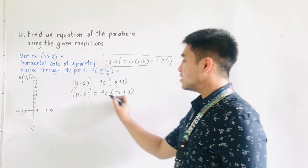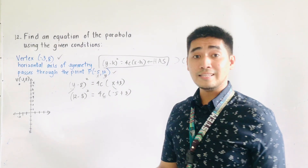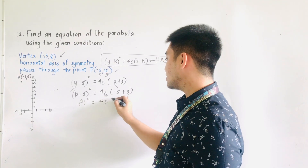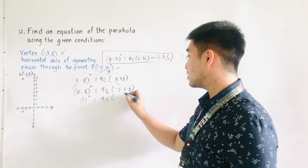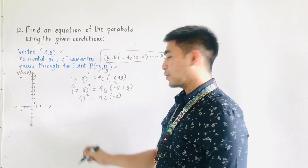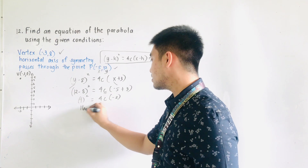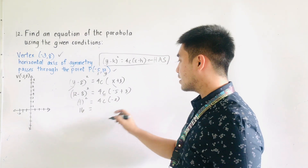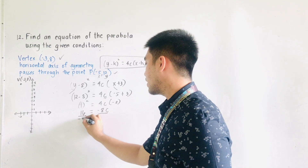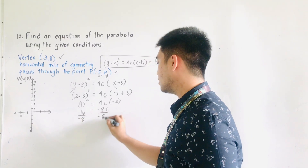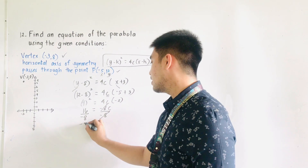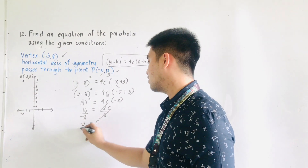Since we need to get the value of c, let us now simplify. 12 minus 8 is 4, so 4 squared equals 4c times negative 5 plus 3, which is negative 2. So 16 is equal to 4 times negative 2, which is negative 8c. Dividing both sides by negative 8, cancel negative 8. Therefore, 16 divided by negative 8 is negative 2. That is the value of c.